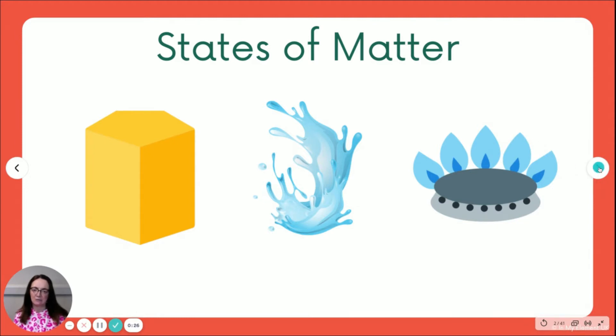The properties we're going to look at are their difference in shape, their difference in volume, their density (so how heavy something is for its size), whether they can be compressed or not, and also whether or not they flow.